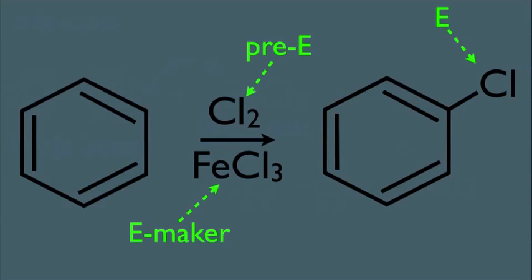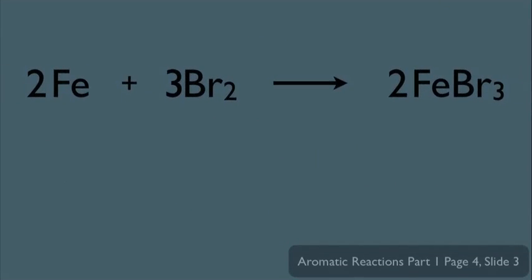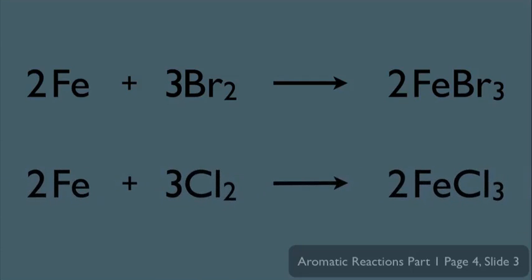However, just in case your organic chemistry test goes this way, let's make sure we know how to make these electrophile makers. It's very simple. All you do is take two Fe's with three Br2's, and you make two FeBr3's. The same could be said about making the electrophile maker for the chlorination reaction. Two Fe's with three Cl2's will make your FeCl3. So these are simply the reactions that prepare our electrophile makers in this reaction.